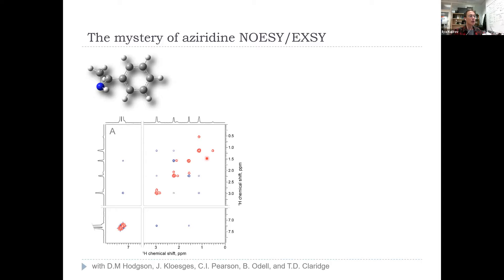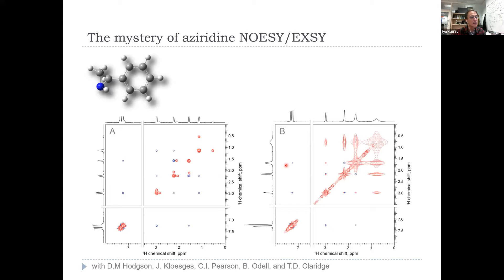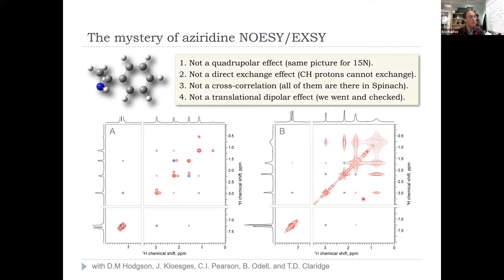Here everything is as it should be. The NOE peaks are negative, the exchange peaks are positive, and everything is lovely, until they started cooling the system down. The viscosity of chloroform doesn't really change all that much if you cool it slightly below zero or even to minus 30 degrees. It's still liquid and not particularly viscous. Predictably lines get broader, but one thing that happened is some NOEs have stayed negative as they should.